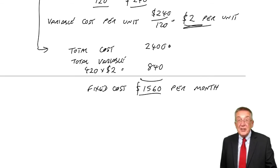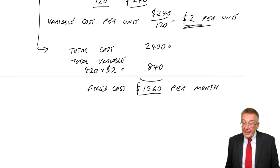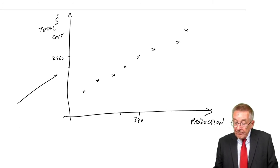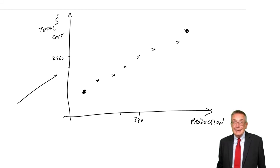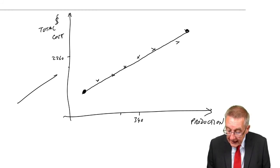Again, in the real world, things aren't perfect. And what have we done to estimate we've taken the lowest and the highest production and we've treated it as though it was linear.